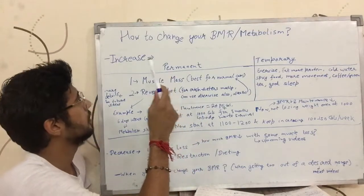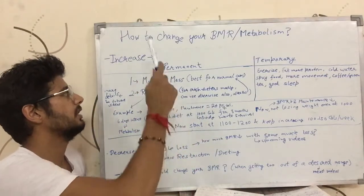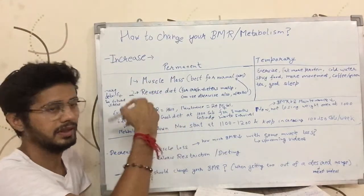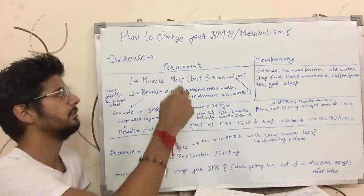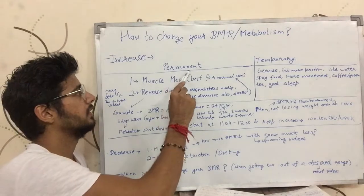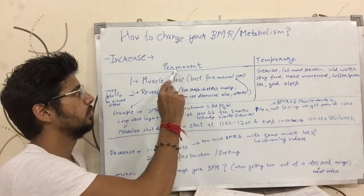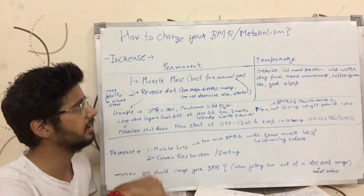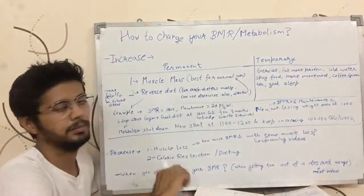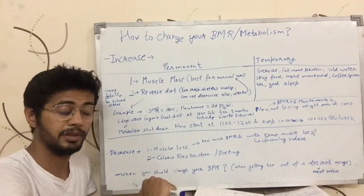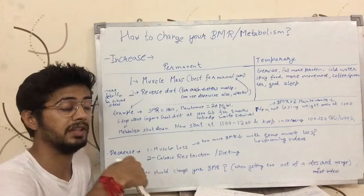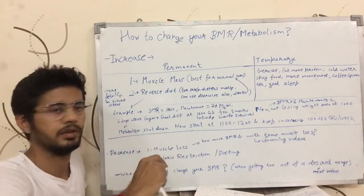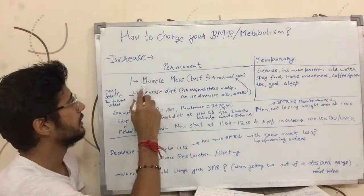So most people want to increase their BMR. We are going to talk about how we can increase the BMR. Increasing the BMR can be done in two ways: one is a permanent way where your BMR increases permanently, and there is a temporary way where your BMR increases for a short period of time. So first, the permanent way.